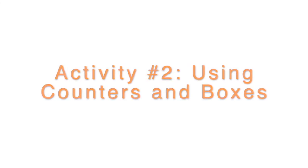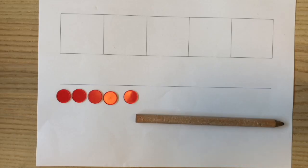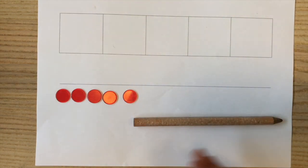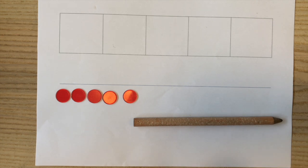Activity number two: using counters and boxes. So for this orthographic mapping activity that I'm going to be doing with my daughter, I only need some counters or chips or something of the kind, a pencil and a blank piece of paper. Well, in this case, I'm using a template that I created. You can actually download this template on the video description for free if you want, but you can easily do this on a blank piece of paper.